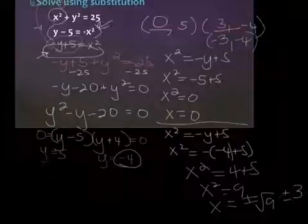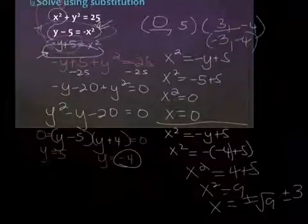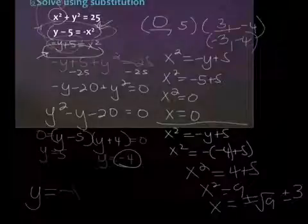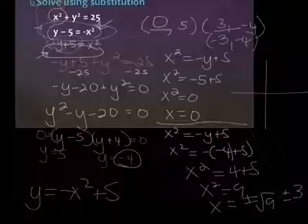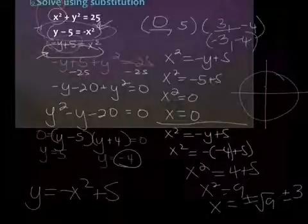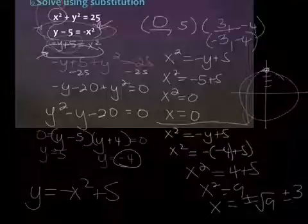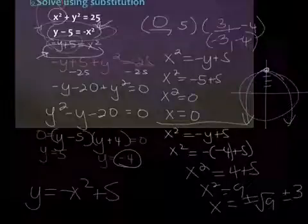So all three of them would be answers: zero five, three negative four, and negative three negative four. If you think about it, this would be a parabola y equals negative x squared plus five, and the first equation is a circle with a radius of five. Negative x squared plus five means it opens upward to here and points downward — that's where your three points come in: the very top of the parabola and then the two intersecting points on the circle.